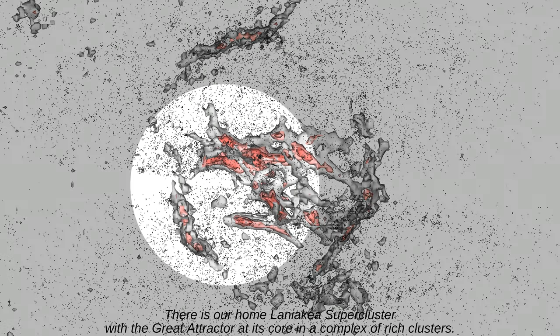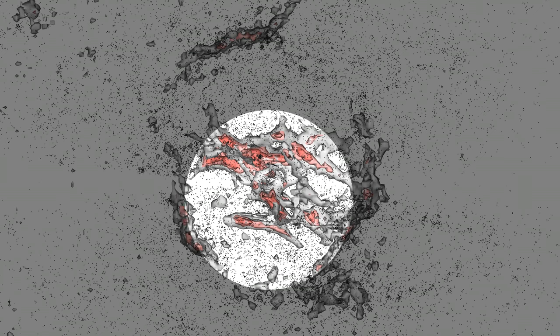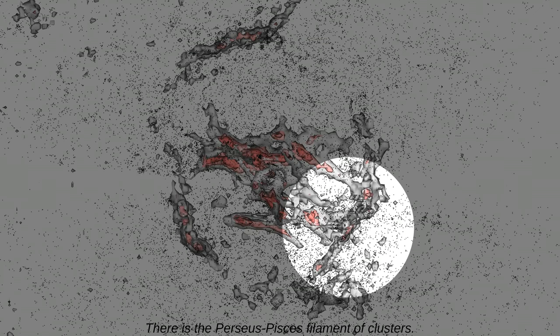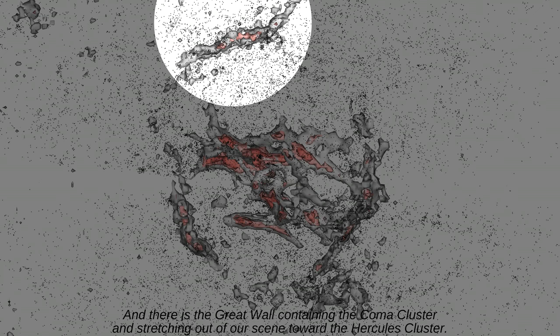There is our home Laniakea supercluster with the great attractor at its core in a complex of rich clusters. There is the Perseus-Pisces filament of clusters, and there is the Great Wall containing the Coma cluster and stretching out of our scene toward the Hercules cluster.